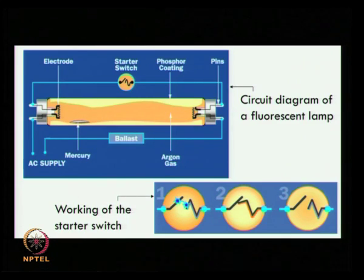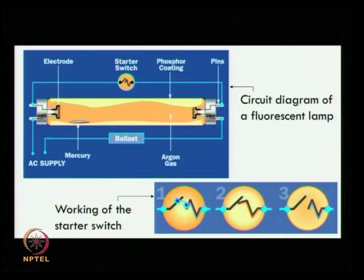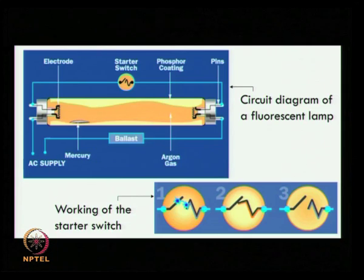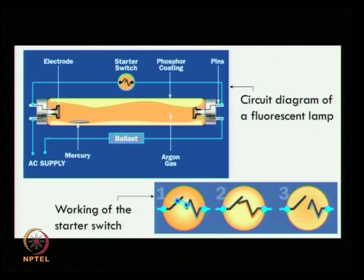After a while, the strip cools down and gets disconnected. This forces the ballast to generate an electric arc through the now fully ionized gas. The electrons from the arc excite vaporized mercury atoms, releasing ultraviolet photons. These photons excite phosphor atoms, emitting visible light.